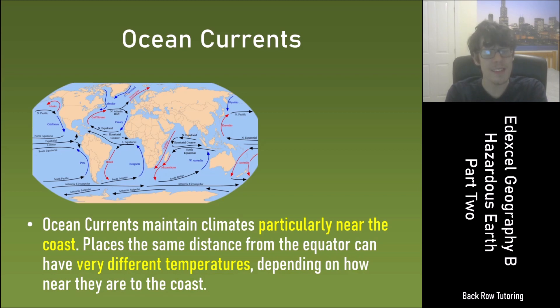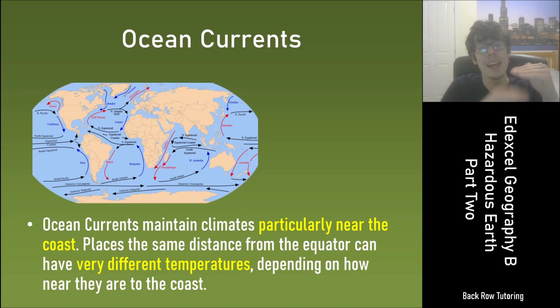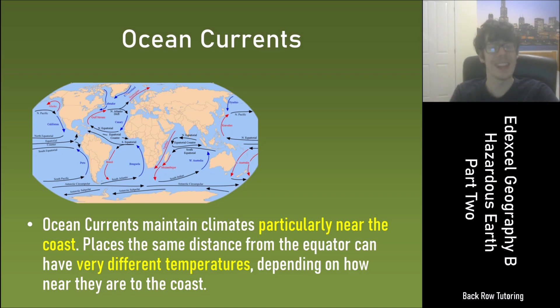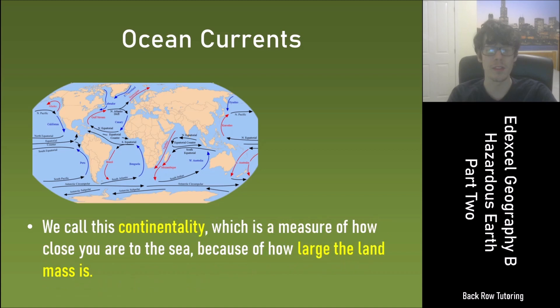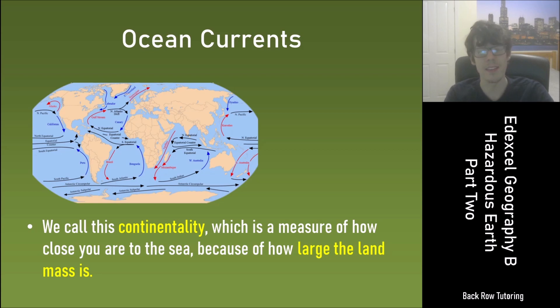Places the same distance from the equator can have very different temperatures depending on how near they are to the coast. We call this continentality, which is a measure of how close you are to the sea because of how large the landmass is.